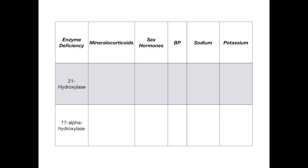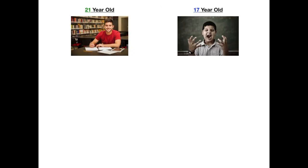The way that my mnemonic works is I need you to imagine somebody who just wants to go to college. We're going to take the number 21 out of 21-hydroxylase deficiency — that'll be our 21-year-old — and take the number 17 out of 17-alpha-hydroxylase deficiency to get a 17-year-old. So in this story, you've got a 21-year-old college student and a 17-year-old high school student, and the goal is to go to college.